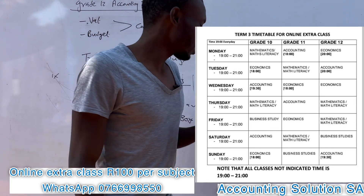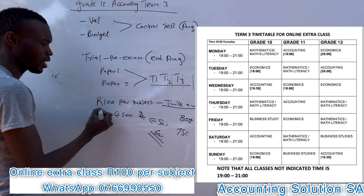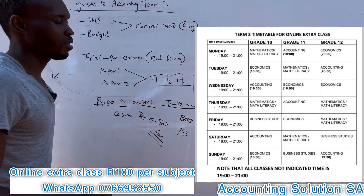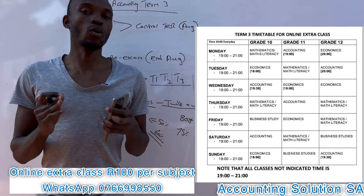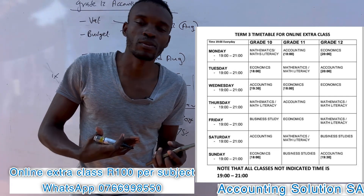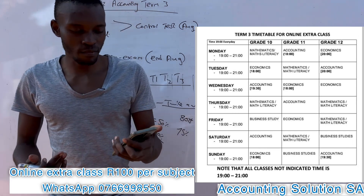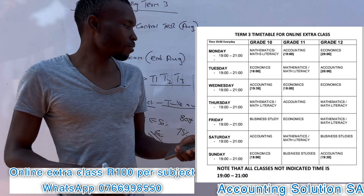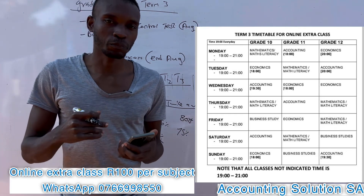We decided to expand our classes and attend twice a week at a price of only 100 Rand per subject. If you want to attend accounting only, you can just pay 100 Rand for accounting and you will be included in a WhatsApp group where you can discuss anything you want or ask any question. If you are studying and feel there is a calculation you don't understand, you will get assistance in our groups so that you can prepare yourself.